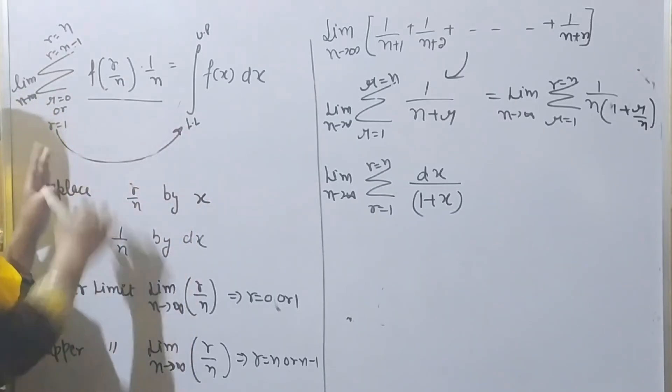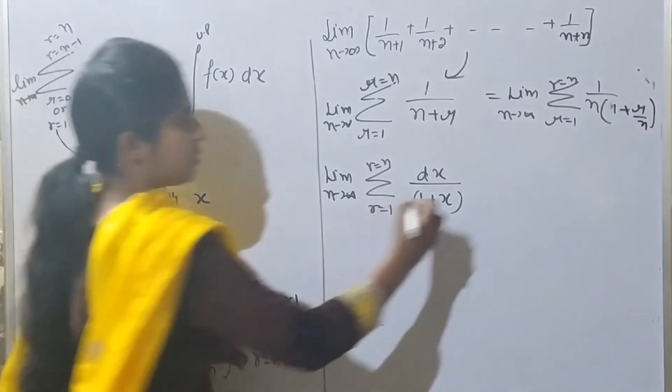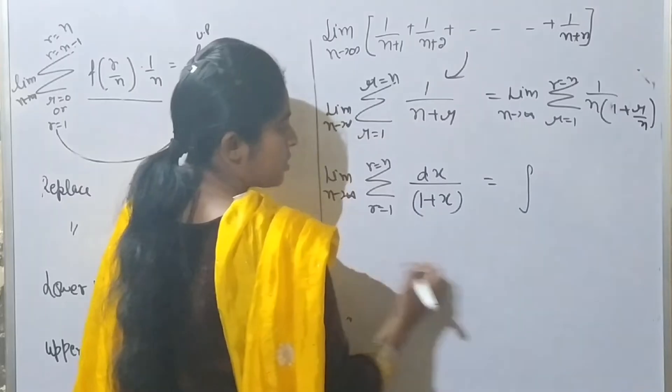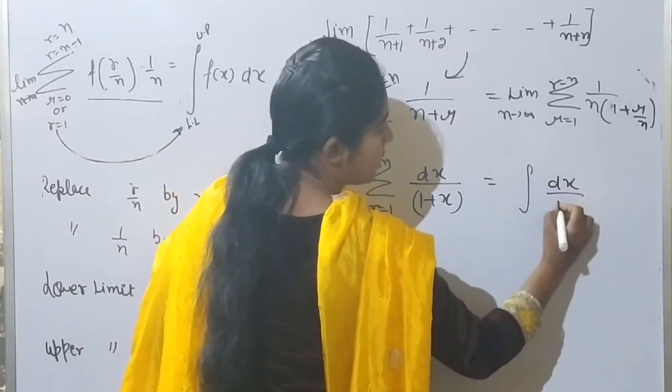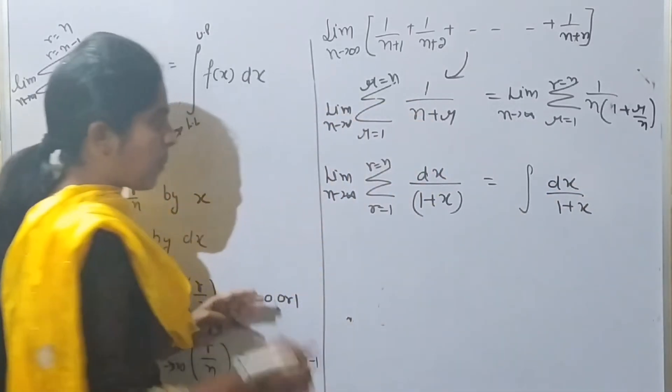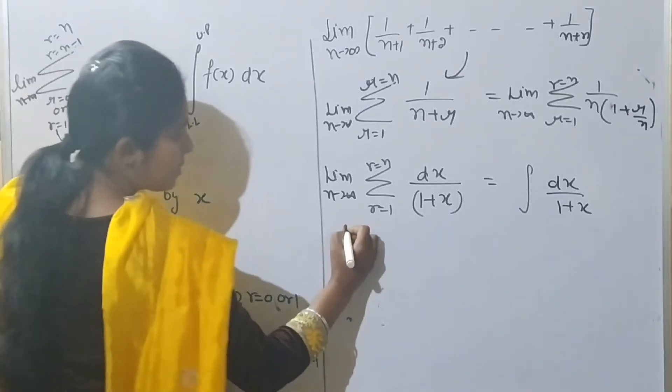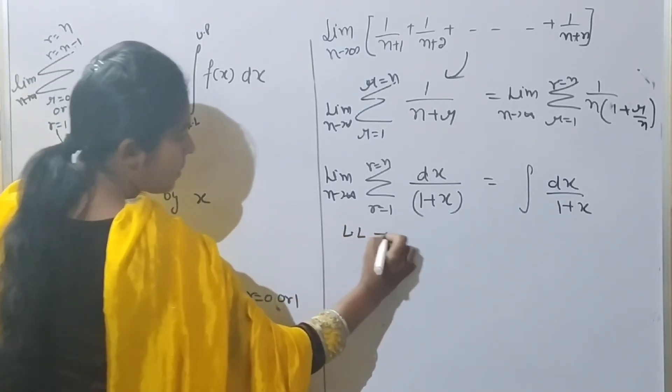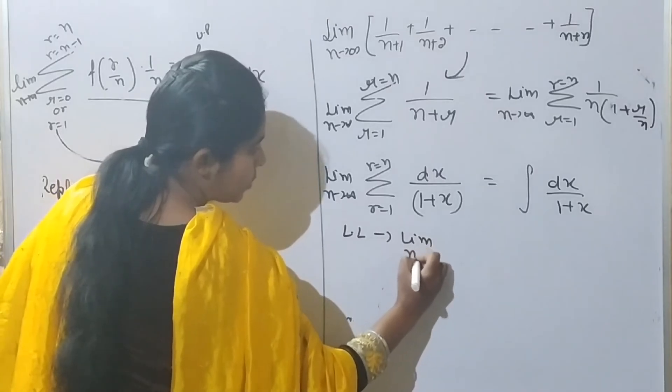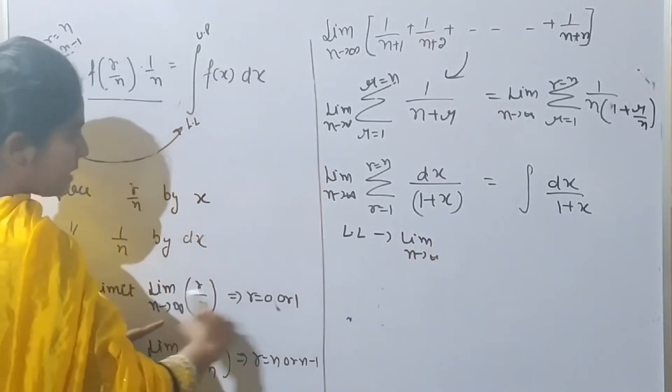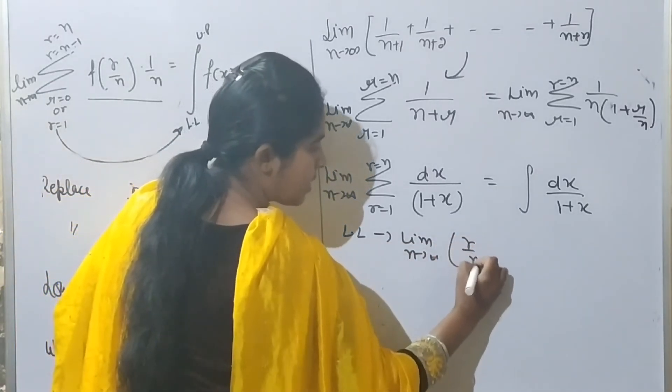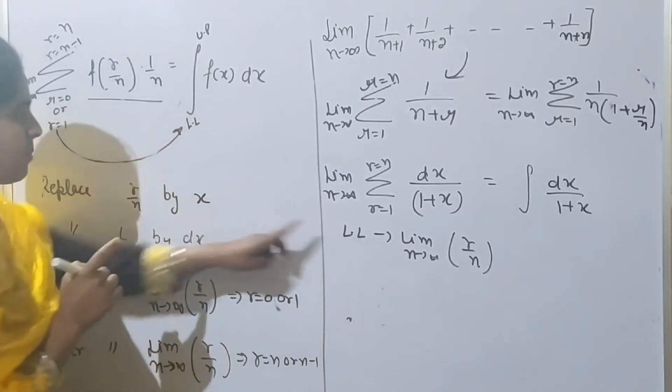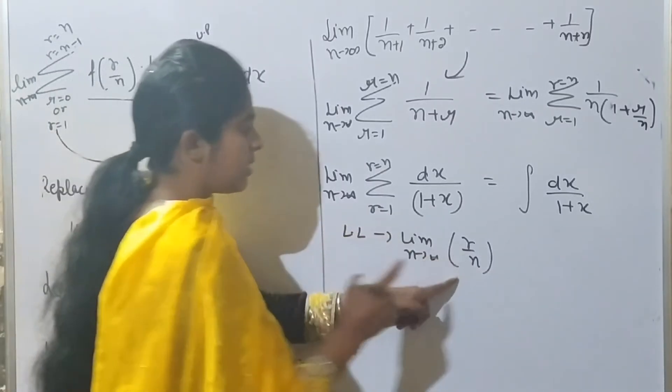Let's put the integration. I've written integration: dx over (1+x). Now for the lower limit—to find it, take r by n with limit n tends to infinity. I will write 1 by n.